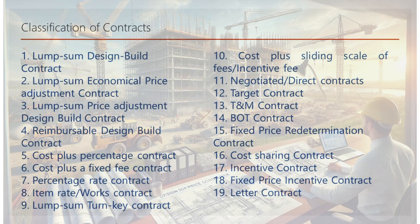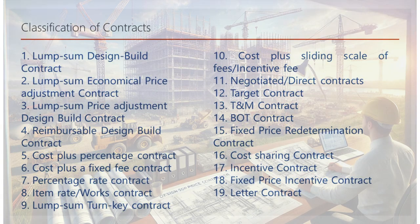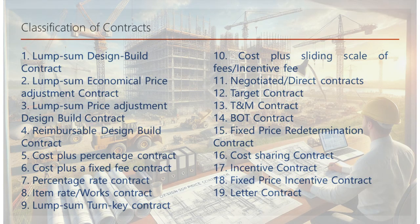16. Cost-sharing contract: both parties share the costs and savings according to a pre-agreed formula. 17. Incentive contract: additional payments are made if the contractor meets or exceeds performance targets. 18. Fixed-price incentive contract: a variation of the fixed-price contract with incentives tied to specific performance metrics. 19. Letter contract: a preliminary agreement that allows work to begin before the full contract is finalized. In the upcoming videos, we'll explore each of these contracts in detail, discussing when and how they should be used to ensure project success.